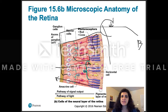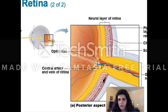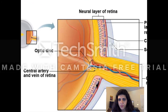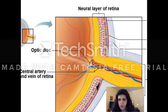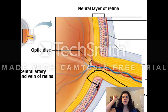The ganglion cells have axons that travel through the optic nerve to the brain. So the path is: rods and cones, bipolar cells, ganglion cells — and the axons travel to the thalamus and then to the occipital lobe, where the visual cortex is located.